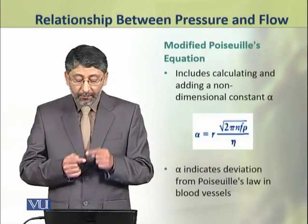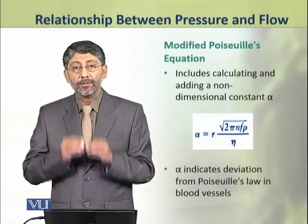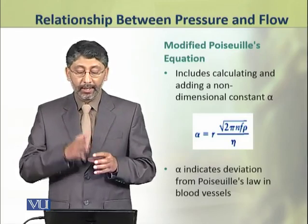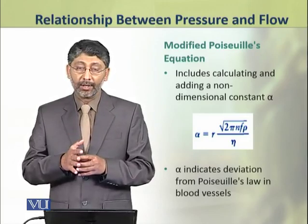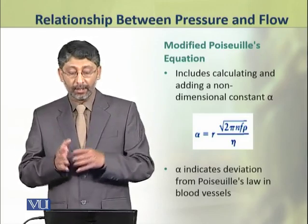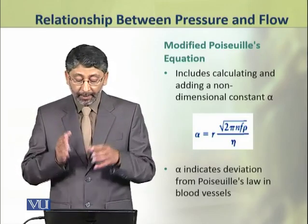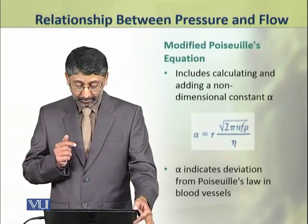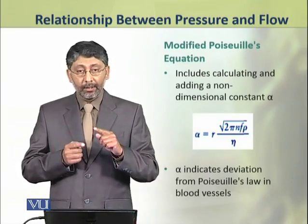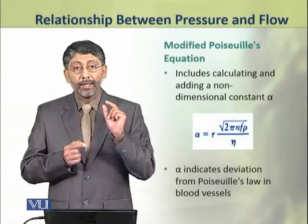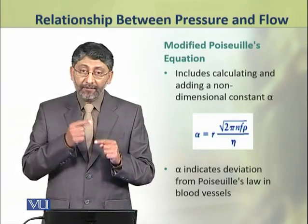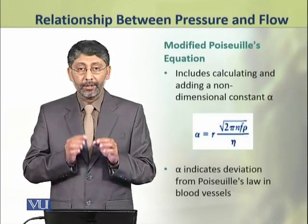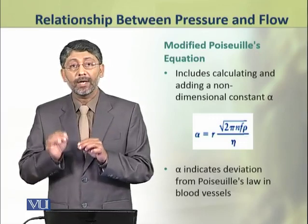Dear students, the modified form of Poiseuille's equation includes the calculation and addition of a non-dimensional constant alpha. This alpha indicates the deviation of Poiseuille's law when applied to blood vessels.